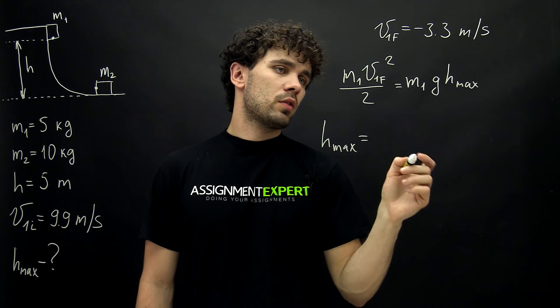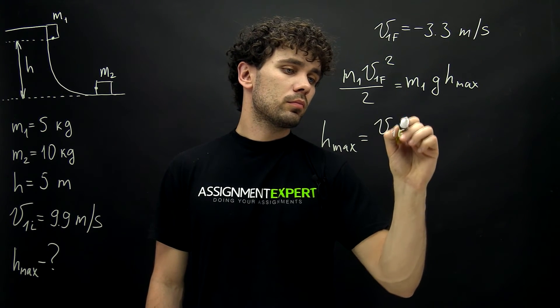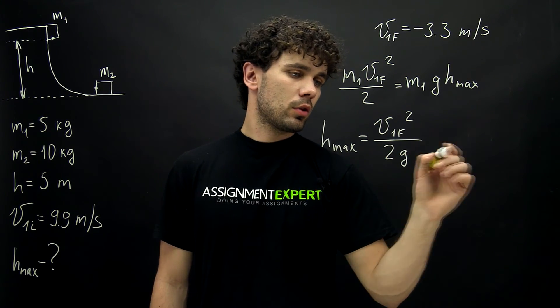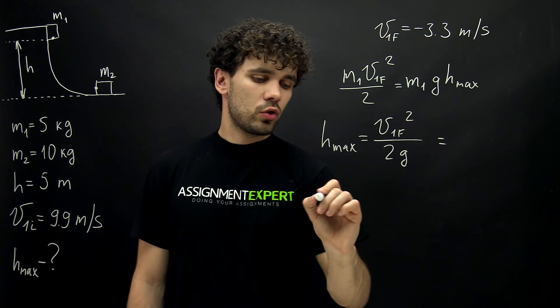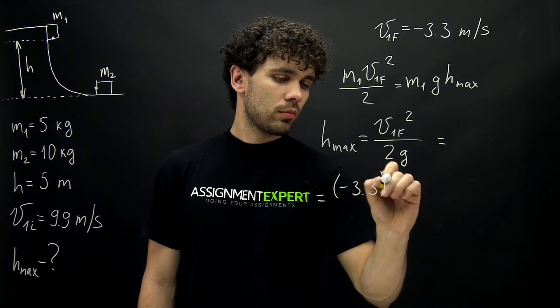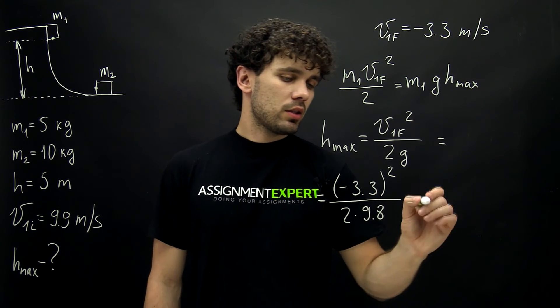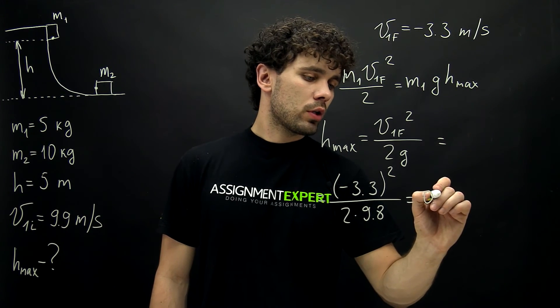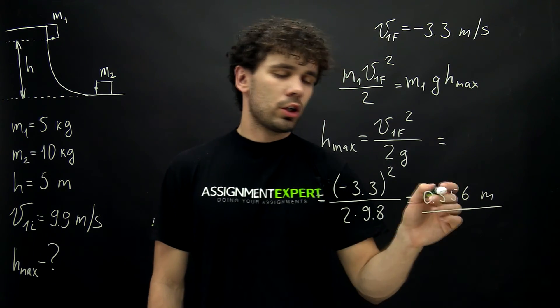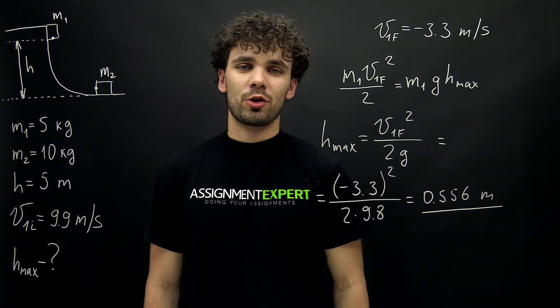And it gives us v1f squared divided by 2g which is equal to negative 3.3 squared over 2 times 9.8. And this is equal to 0.556 meters. So here is the max height at which the first block rises after the collision. Thanks for watching us. See ya!